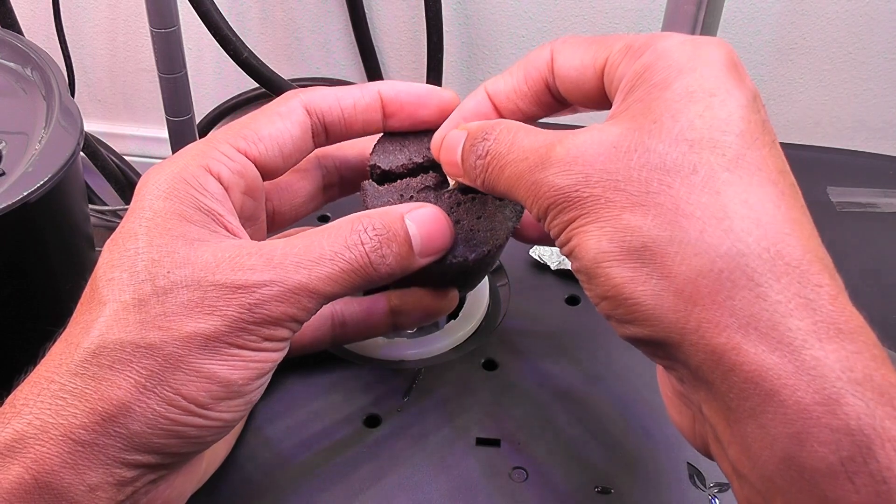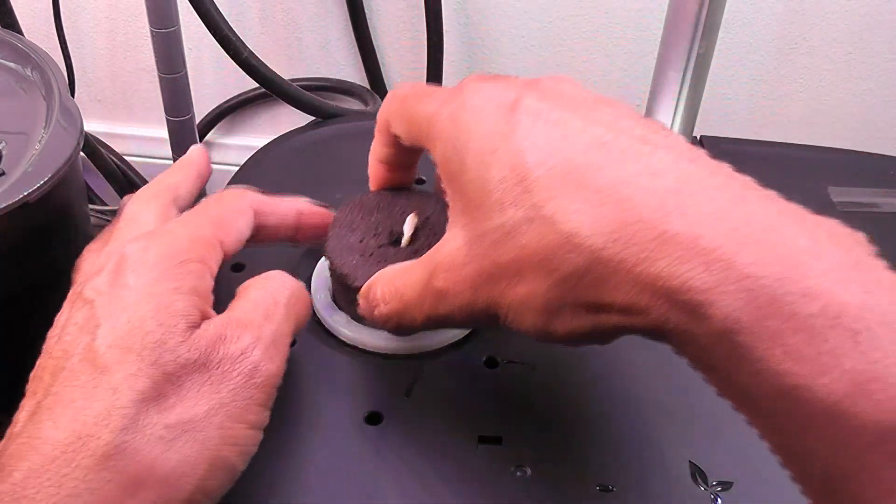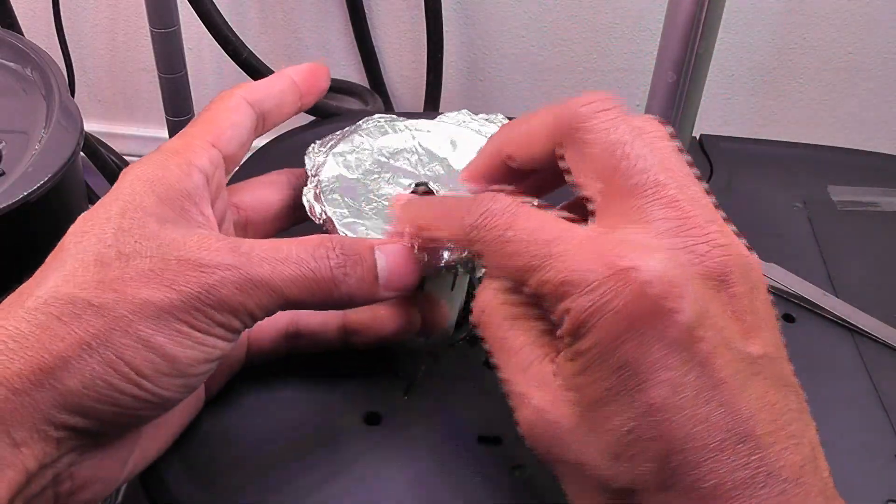Now place the sponge back into the pod and add the foil back, which acts as a pod sticker.